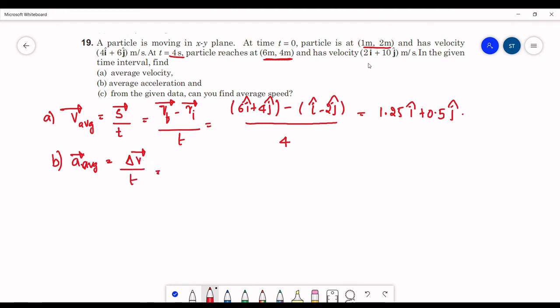Final velocity is 2 i cap plus 10 j cap minus initial velocity 4 i cap plus 6 j cap upon total time taken 4 seconds. This will be equal to minus 0.5 i cap plus j cap. Units will be meters per second squared and here it will be meters per second.